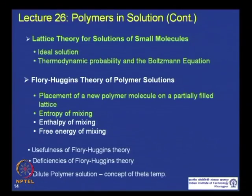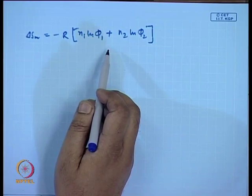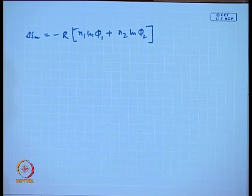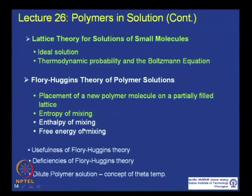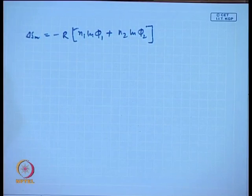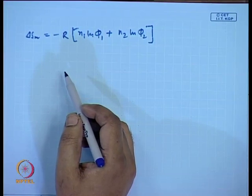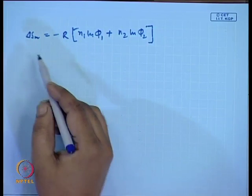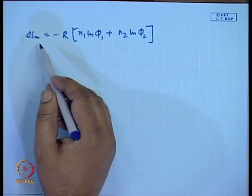We received a final expression for the entropy of mixing. In this lecture, we will derive the expression for enthalpy of mixing. Once we get the enthalpy of mixing, we will obviously get the free energy of mixing. Once we have the final Gibbs free energy of mixing expression, we will look at the usefulness of the Flory-Huggins theory and its limitations or deficiencies. We will then apply Flory-Huggins theory to dilute polymer solutions and get the concept of theta temperature. This is the entropy of mixing expression we deduced for the polymer-solvent system.